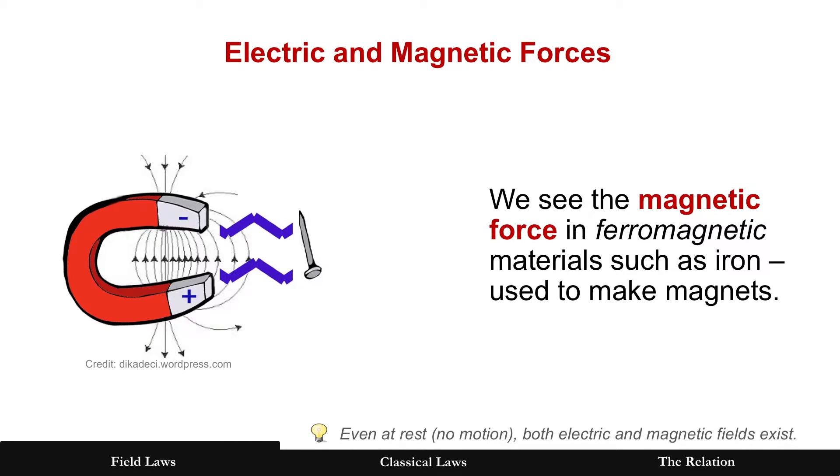And this is what it looks like, right, when you do have a material. There are magnetic materials, for example like iron, they can be used to make magnets and here it's attracting the nail. The key thing to note here is that even at rest, right, nothing is moving in the magnet, both electric and magnetic fields do exist.